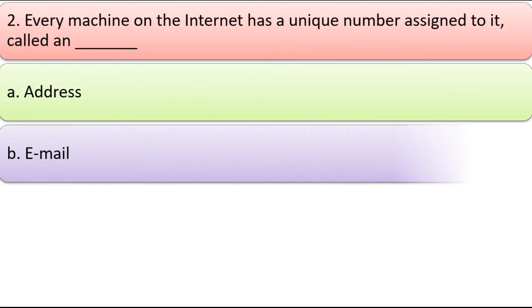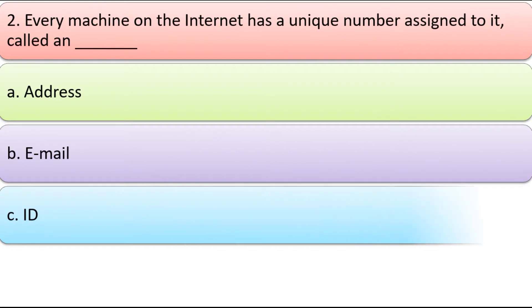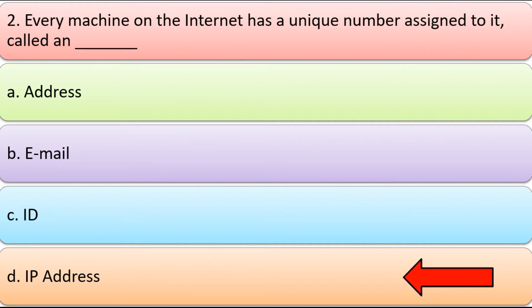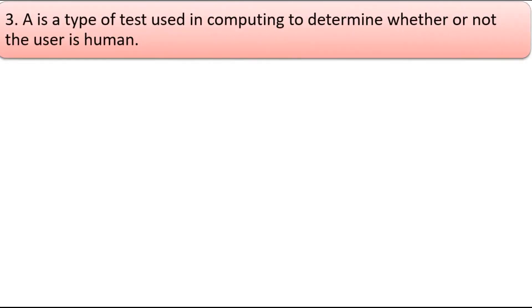Second, every machine on the internet has a unique number assigned to it. Options: a) Card, b) Address, c) Email ID, d) IP Address. Correct answer is d) IP Address.